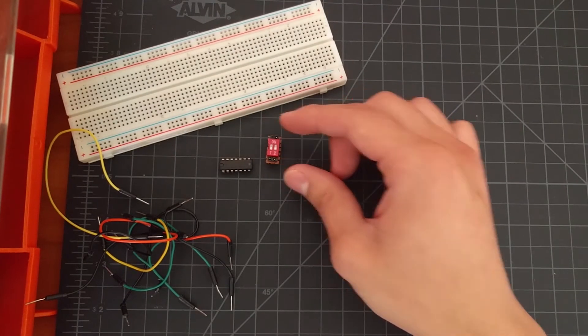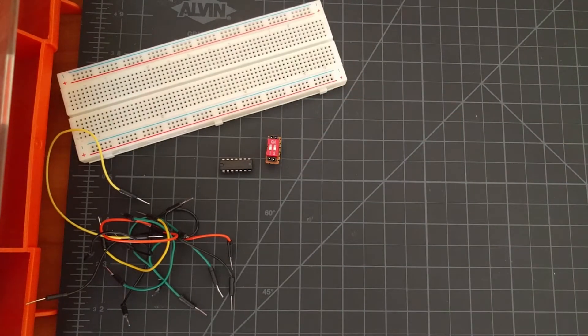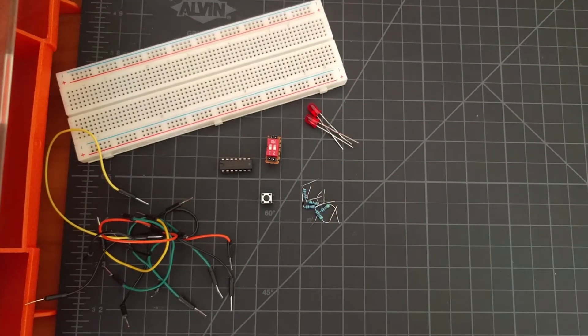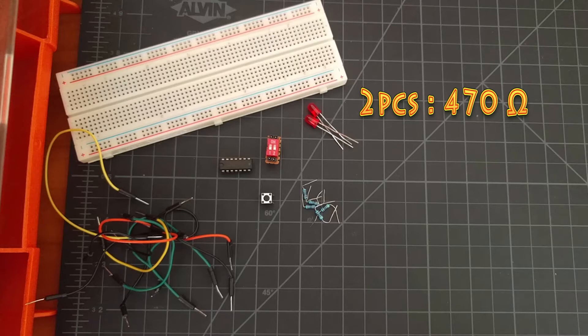a 2-input dip switch for our J and K inputs, a push-button switch for our clear signal, and 2 LEDs. You will also need a total of 5 resistors consisting of 2 470-ohm resistors and 3 1k-ohm resistors.